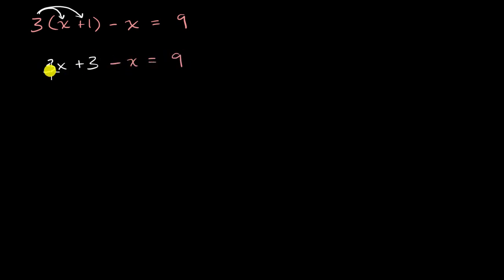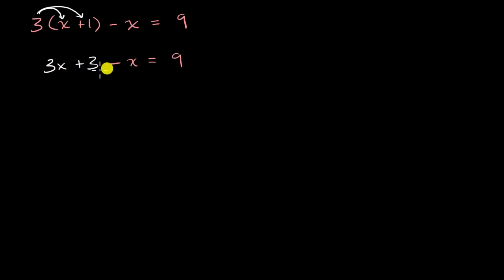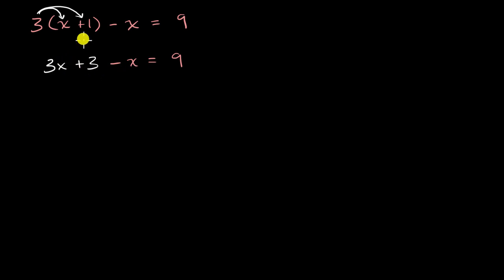The key here is that the left-hand side of the second equation is equivalent to the left-hand side of the top equation. So if the left-hand side of the top equation is equal to nine, then the left-hand side of this bottom equation is going to be equal to nine as well. Another way to think about it is if the entire top equation is true, the entire bottom equation must be true, and vice versa.